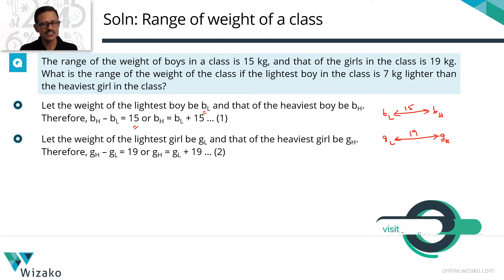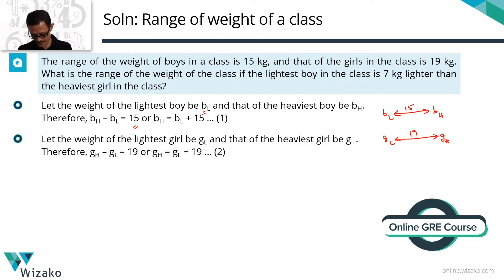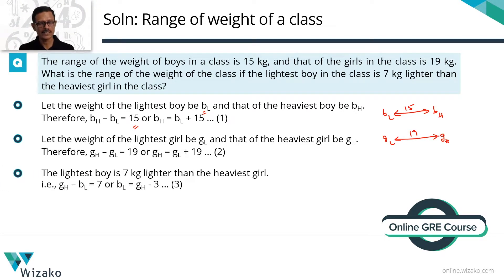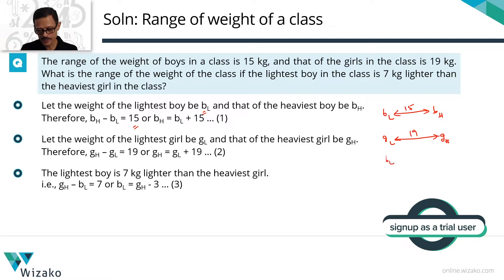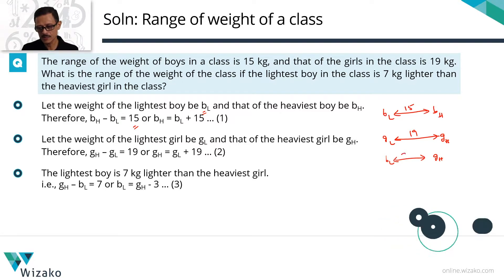The third statement gives a link between the two groups: the lightest boy is 7 kg lighter than the heaviest girl. So on our number line, the lightest boy sits to the left of the heaviest girl, with a gap of 7 kg between them.